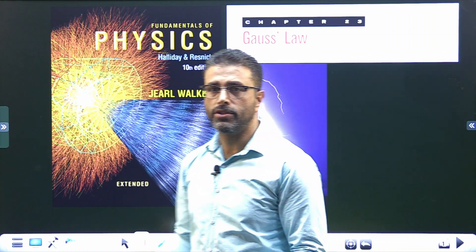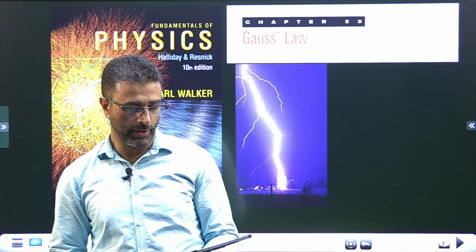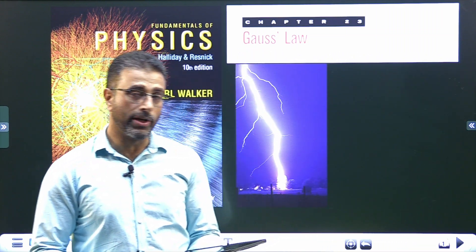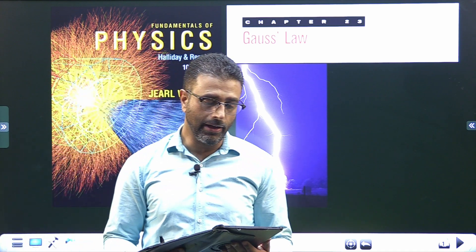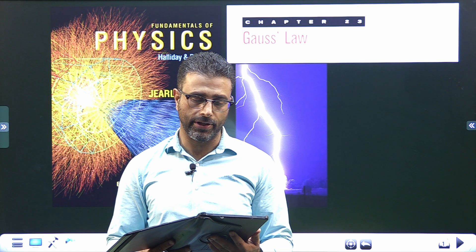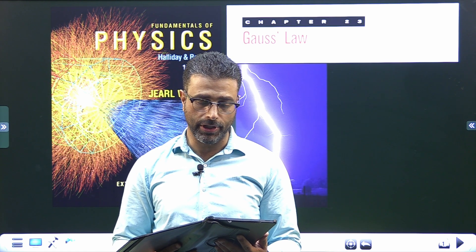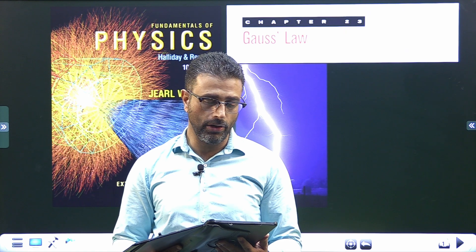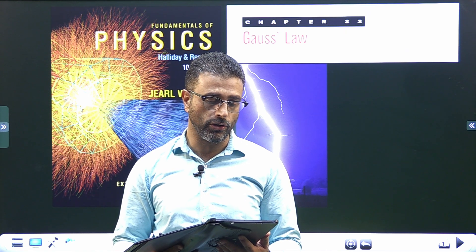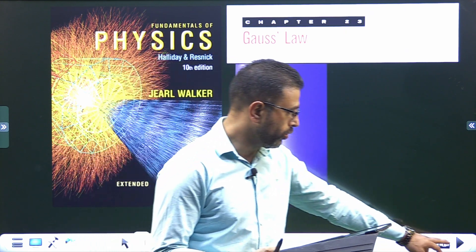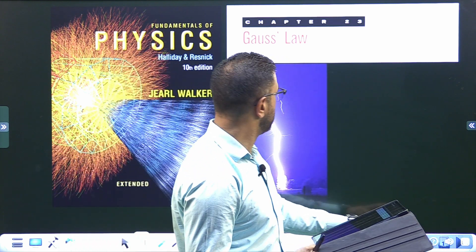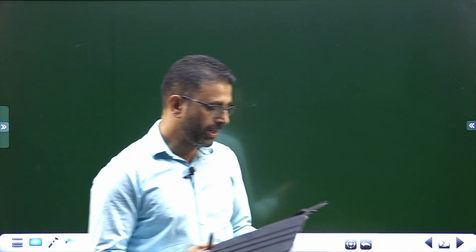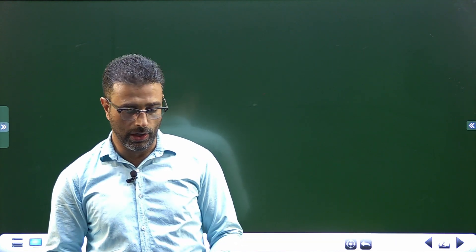Assalamu alaikum warahmatullahi wabarakatuh. Chapter 23, Gauss's law, problem number 18. The electric field just above the surface of a charged conducting drum of a photocopying machine has a magnitude E of 2.3 × 10⁵ Newton per coulomb. What is the surface charge density on the drum?